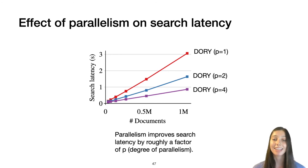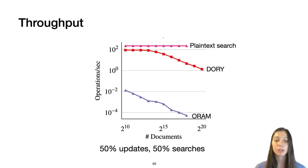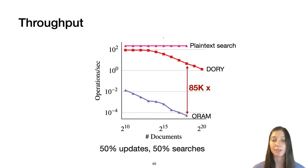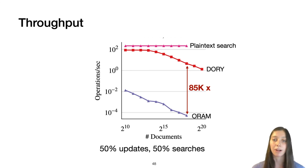We also measured throughput on a variety of workloads. For a workload of 50% updates and 50% searches — which is what the companies expected — both axes use a logarithmic scale. While Dory's throughput does decrease as the number of documents increases, it is still much more efficient than the ORAM baseline, with an 85,000-times difference in performance. This is largely due to the high overhead of updates in ORAM, where an ORAM access is required for every keyword in a document. In Dory, an update just requires a small constant-size upload to the search index, which accounts for the large difference in throughput.